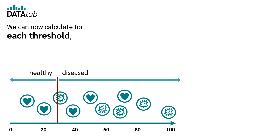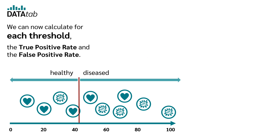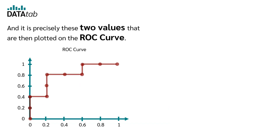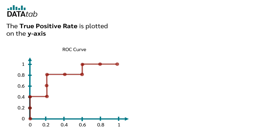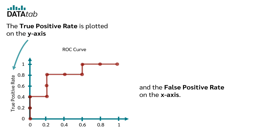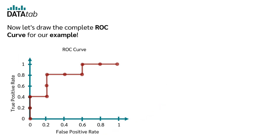We can now calculate for each threshold the true positive rate and the false positive rate, and it is precisely these two values that are then plotted on the ROC curve. The true positive rate is plotted on the y-axis and the false positive rate on the x-axis. Now let's draw the complete ROC curve for our example.